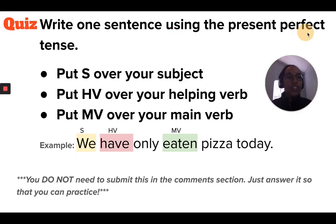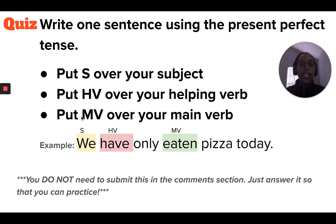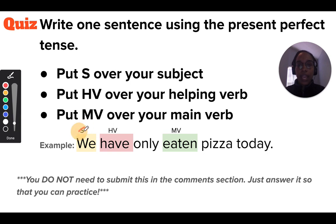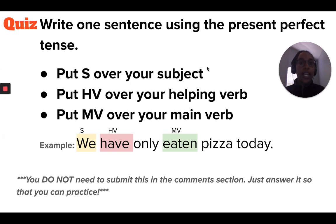Quick quiz: on that sheet of paper, write one sentence using the present perfect tense. Annotate the sentence by putting an S over your subject, HV over your helping verb, and MV over your main verb. For example, in 'We have only eaten pizza today,' put S over 'we,' HV over 'have,' and MV over 'eaten.' You do not need to submit this in the comment section — this is just notes for you. Go ahead and pause the video and answer this question.